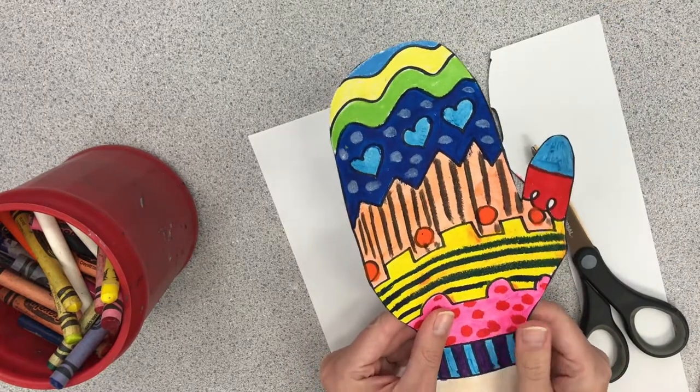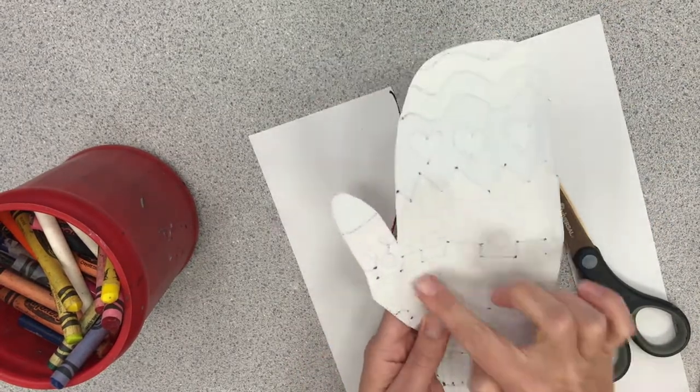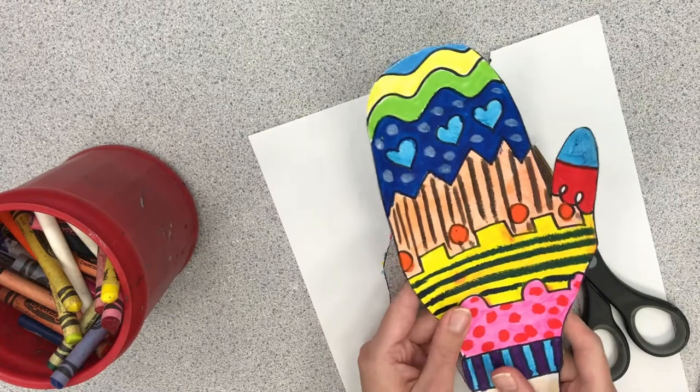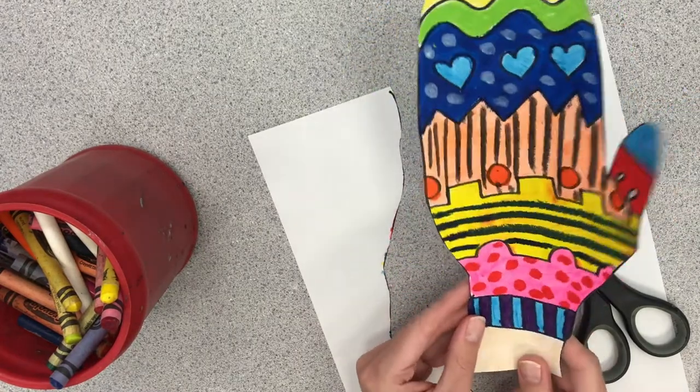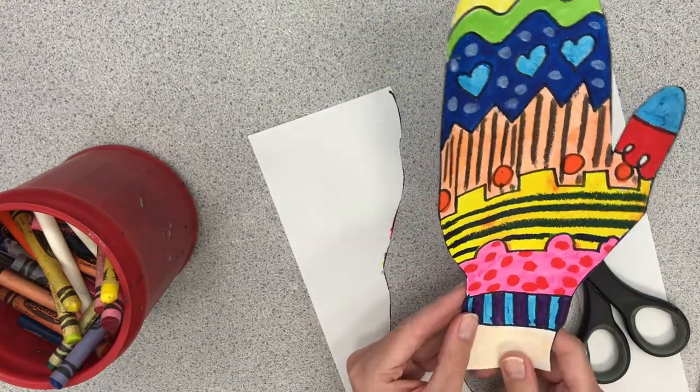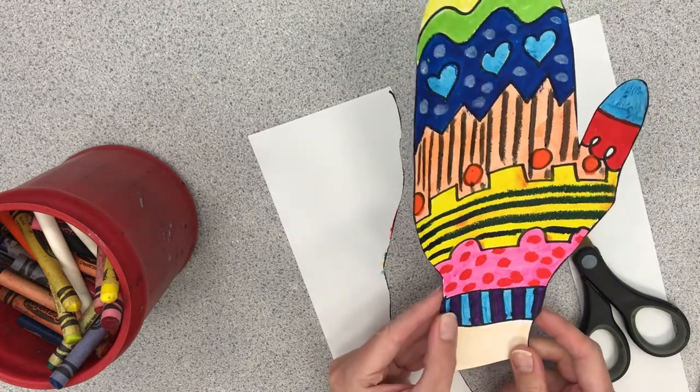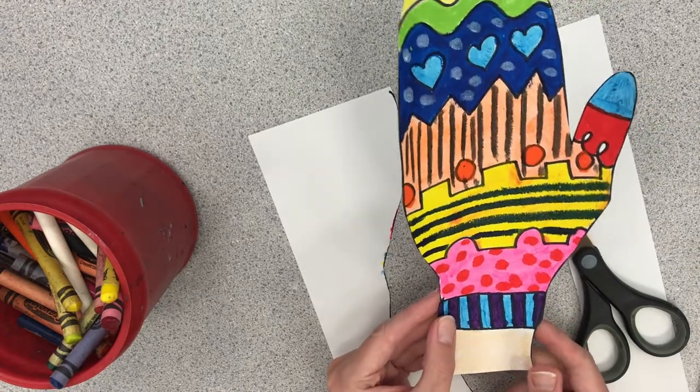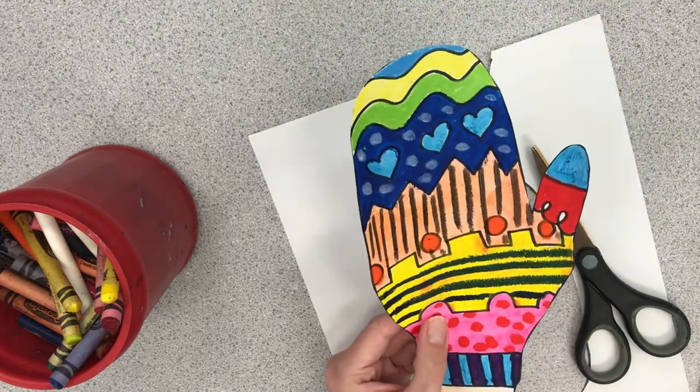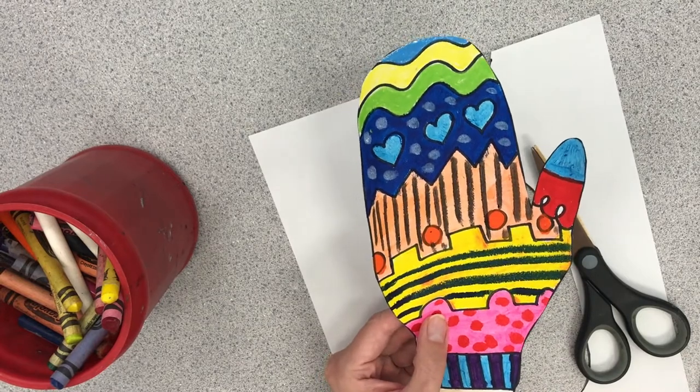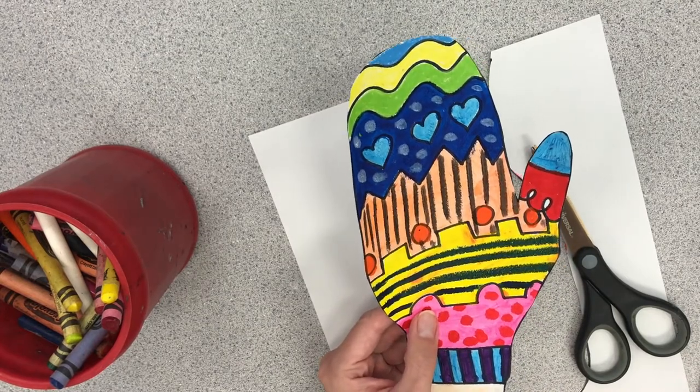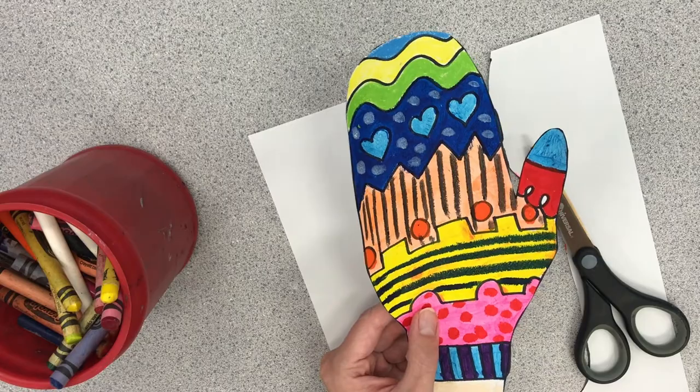So what I'm gonna do now is I'm gonna take this mitten. I'm gonna put glue on the back and stick it to a piece of paper and I might add something different to it. I don't know. But I hope you guys enjoyed this mitten project. I can't wait to see what they look like. Be sure to post them on Seesaw. A colored mitten and when you're done you're gonna hit the check mark up at the top. Alright, see you later.